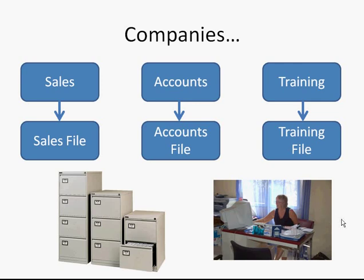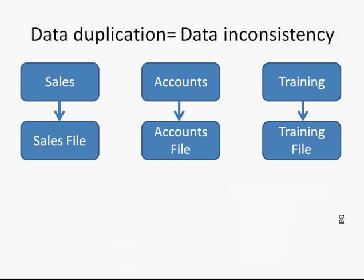Either way, the same problem arose: data duplication. The sales department would be storing information about customers. The accounts department would be storing information about the same customers — the same names, addresses, telephone numbers, etc. And the training department would also be storing its own version of that data.